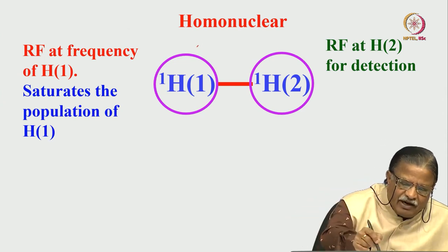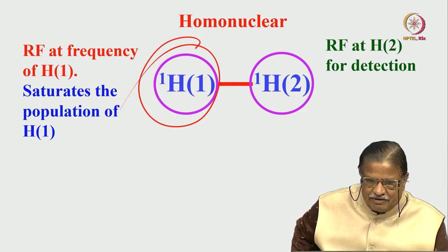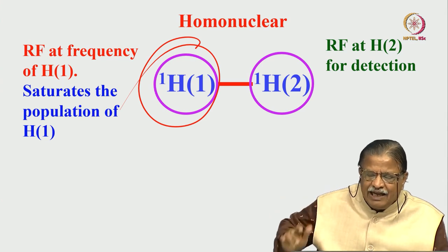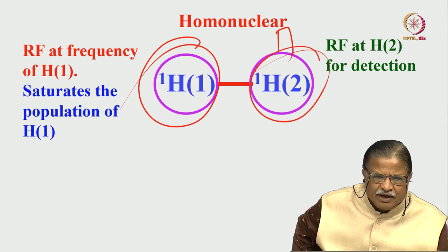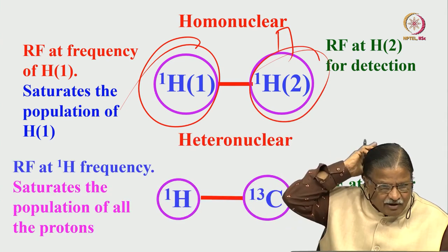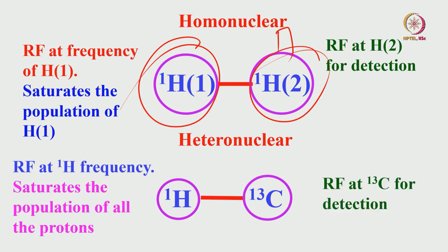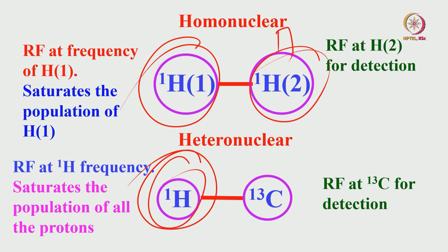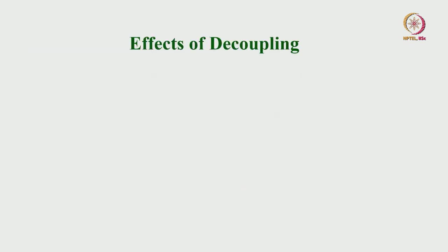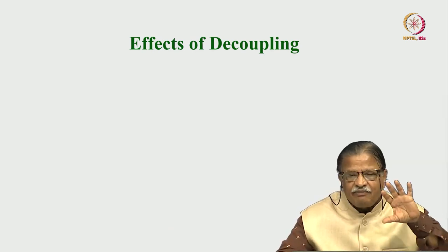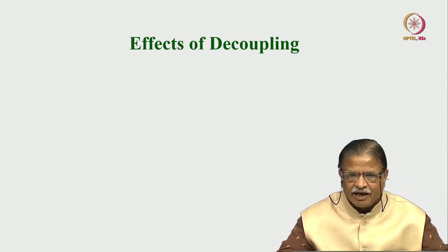In homonuclear decoupling we apply a radiofrequency pulse on one channel, saturating the spins — making the population between the two spin states equal — and then apply a read pulse on another proton to detect the signal. This must be done selectively; broadband is not feasible there. For heteronuclei, the RF strength must be at least twice larger than the coupling constant. We saturate all proton populations and detect the carbon-13 signal, completely breaking all proton-carbon couplings.